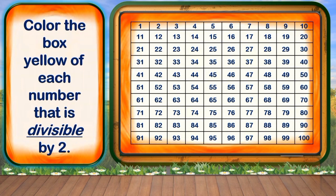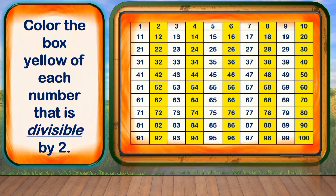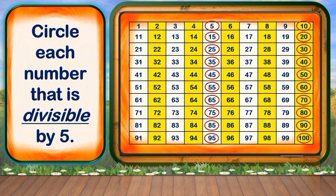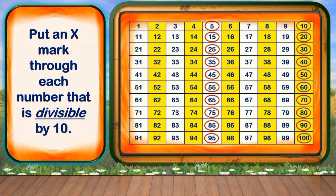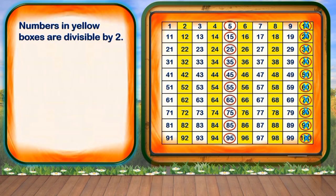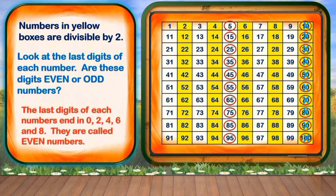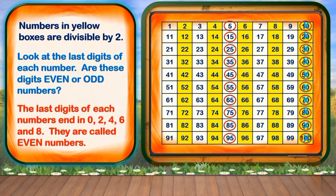First, color the box yellow of each number that is divisible by 2. All right, children, you got it. Second, circle each number that is divisible by 5. Fantastic, you made it. Lastly, put an X mark through each number that is divisible by 10. Wow, you did it again, children. Numbers in yellow boxes are divisible by 2. Look at the last digit of each number — are these digits even or odd numbers? Correct! The last digits of each number end in 0, 2, 4, 6, and 8. They are called even numbers.